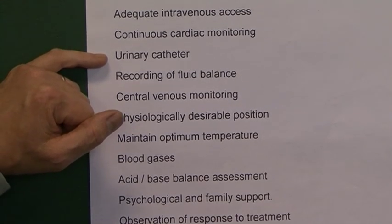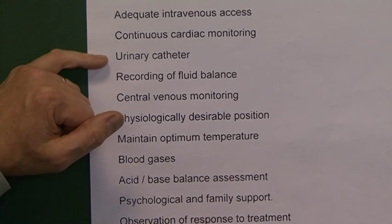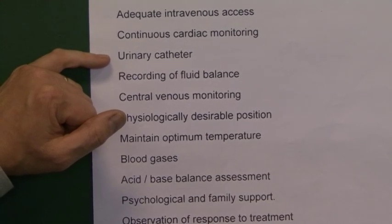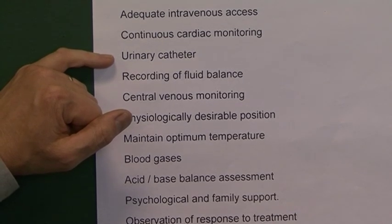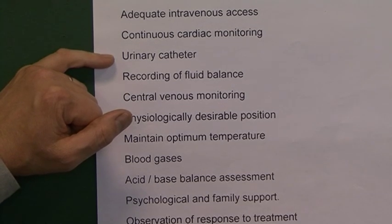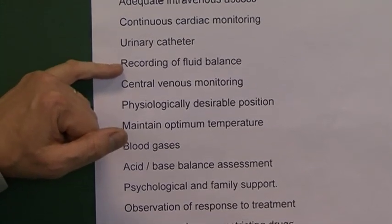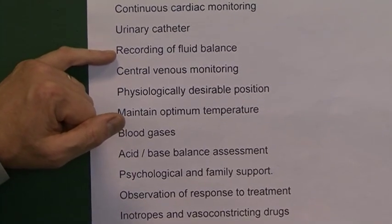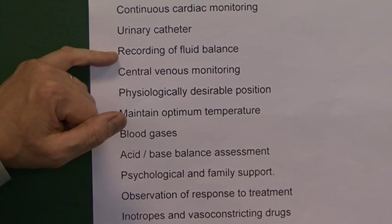We want to guard against the patient becoming oliguric or anuric. If the kidneys are hypoperfused for a period of time, the patient can develop acute tubular necrosis (ATN) — a renal injury as a result of hypoperfusion. This is all tied in with fluid balance, which needs to be very accurately recorded.